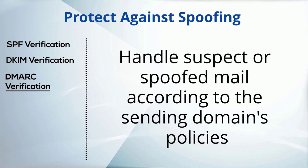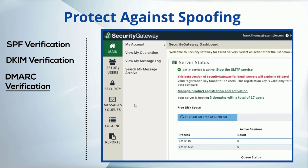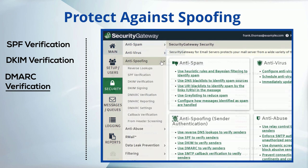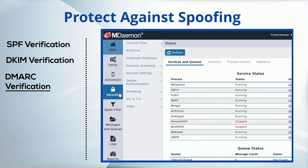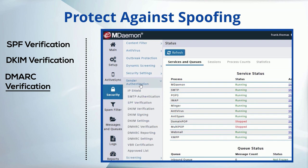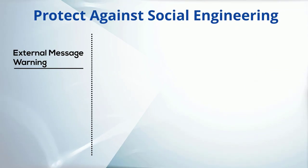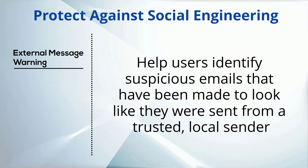Use DMARC verification to handle suspect or spoofed mail according to the sending domain's policies. In Security Gateway, you'll find these settings under Security, Anti-Spoofing. And in MDaemon Remote Administration, you'll find them under Security, Sender Authentication. You can help protect users from social engineering by displaying a warning when a message is received from an external source.